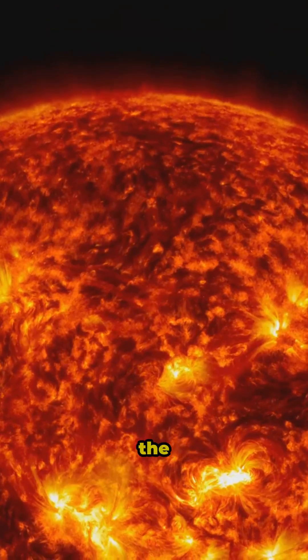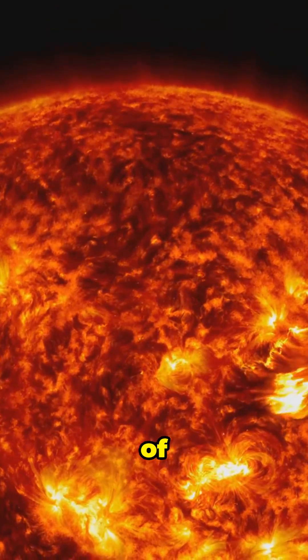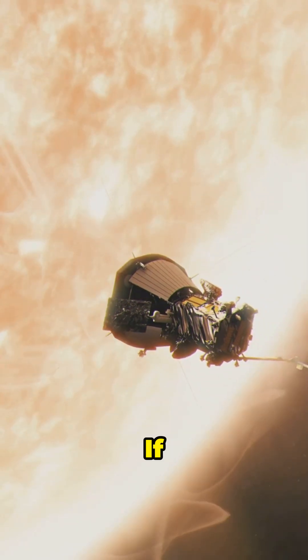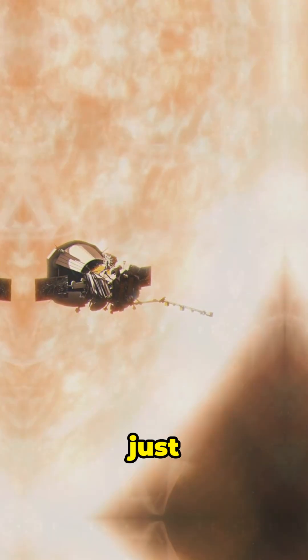Back in its youth, the sun blasted out wild solar storms, flung giant waves of plasma, and lit up space with super-powered X-rays. If you had a spaceship back then, you'd need a super-shield just to survive.